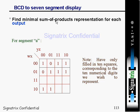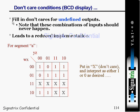Now for BCD to 7-segment display, find the minimal sum of products representation for each output. You can see w, x, y, z — only 10 squares are filled in corresponding to the 10 numerical digits we wish to represent. We solve this to find the minimum sum of products. Don't care conditions are filled in for undefined outputs — if there is an undefined output, fill it with a don't care.